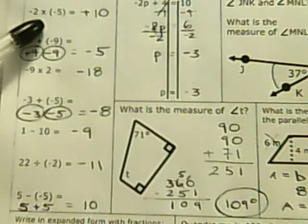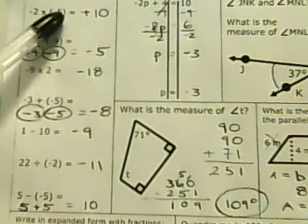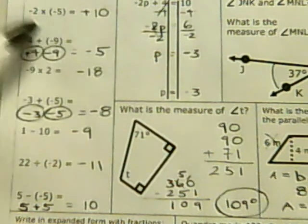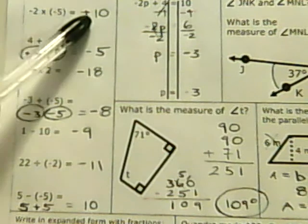For multiplication, you do it like normal multiplication. 2 times 5 gives you 10. Then you decide on the sign. A negative times a negative gives you a positive.